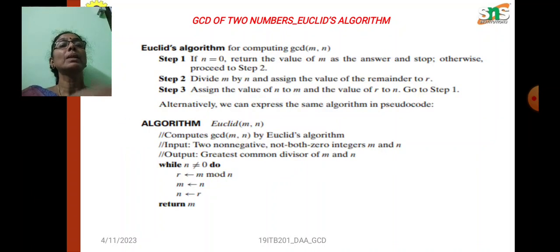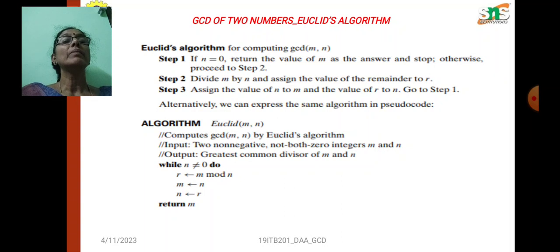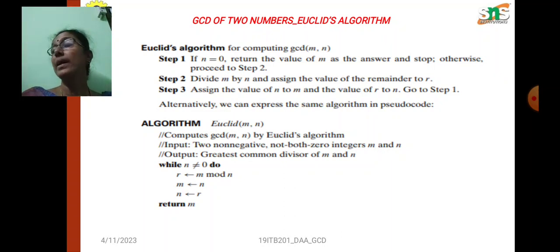Now we will see the algorithm to calculate the GCD using Euclid. Step 1: if n is equal to zero, return the value of m as the answer and stop. Otherwise, proceed to step 2: divide m by n and assign the remainder to variable r. Step 3: assign the value of n to m and the value of r to n, then go back to step 1 and check if n equals zero.